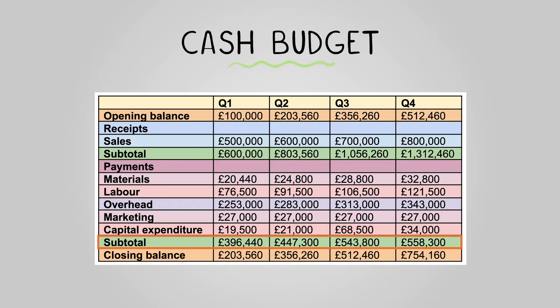Payments — a list of all expenditures budgeted to be spent by the enterprise. Payments subtotal — calculated by adding all budgeted payments. And closing balance — calculated by subtracting the payments subtotal from the receipts subtotal.